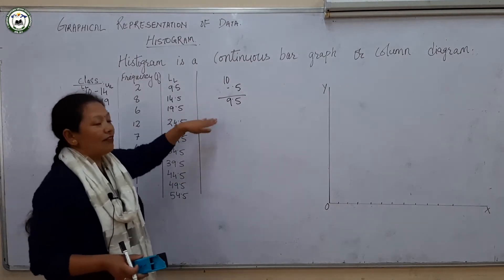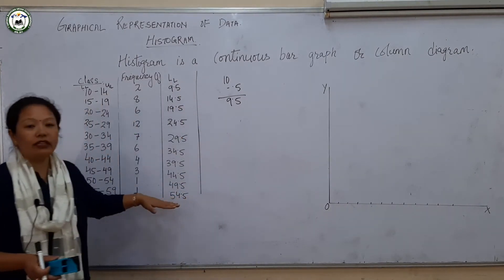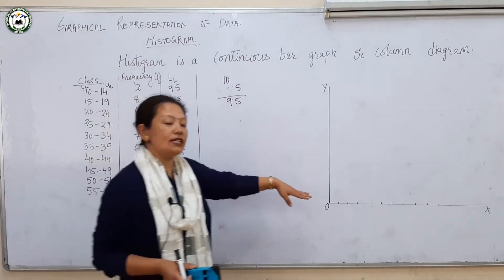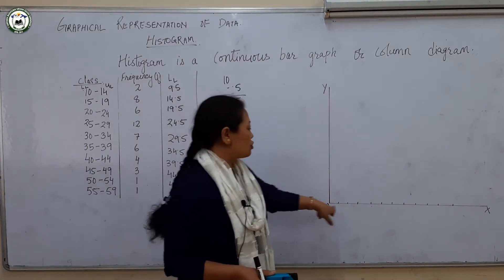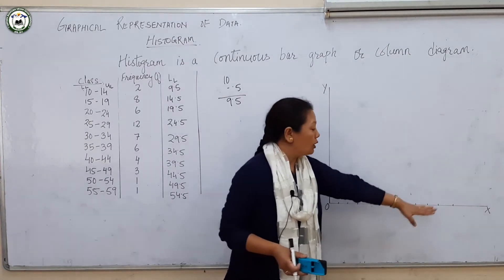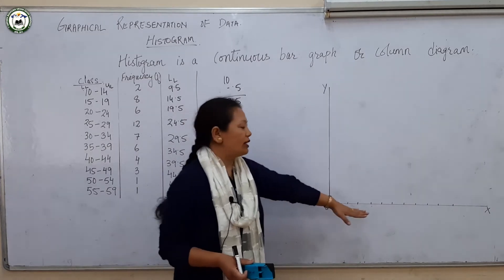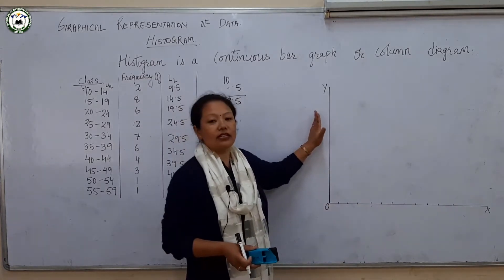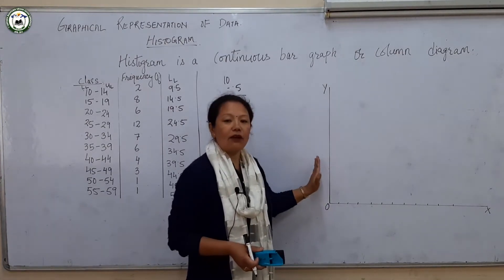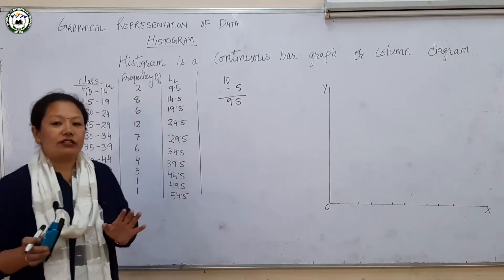Now, in the frequency polygon we first got the midpoints and then plotted them on the x-axis. So you need graph paper. On the graph paper you need to draw two lines — one vertical and one horizontal. The horizontal line is the base, called the x-axis, and y is the vertical line, which is specially for the frequency. That means all the frequencies are plotted on the y-axis.